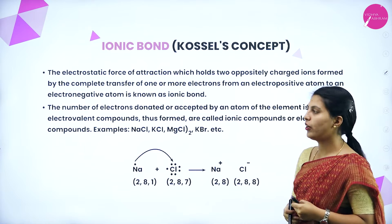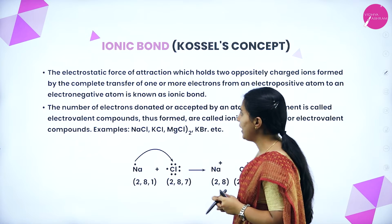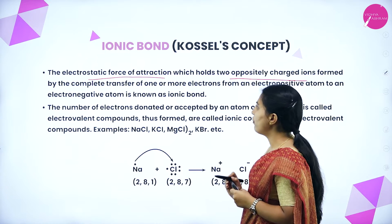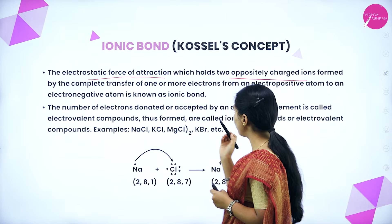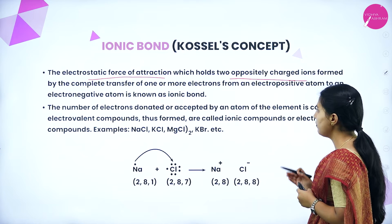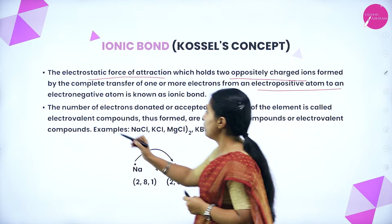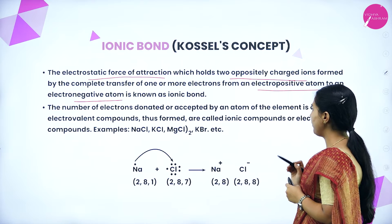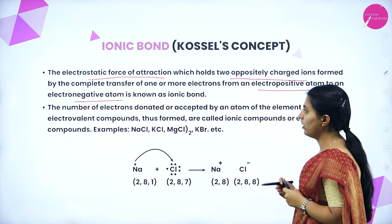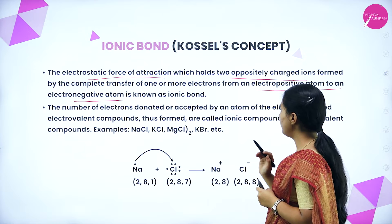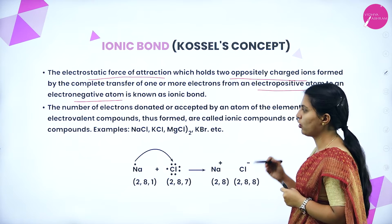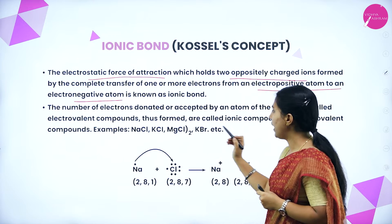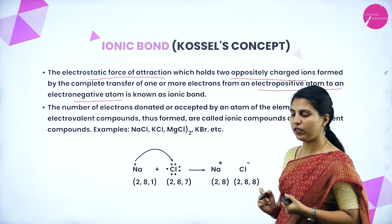First we will see the ionic bond in the Kossel concept. The electrostatic force of attraction which holds two oppositely charged ions, formed by the complete transfer of one or more electrons from an electropositive atom to an electronegative atom, is known as an ionic bond. The number of electrons donated or accepted by an atom is the electrovalency. Compounds thus formed are called ionic compounds or electrovalent compounds. Examples include sodium chloride, potassium chloride, magnesium chloride, and potassium bromide.